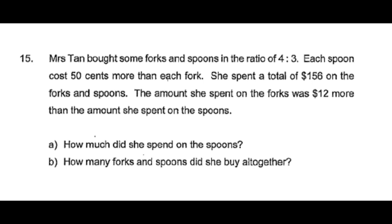Mrs. Tang bought some forks and spoons in the ratio 4 is to 3. Each spoon cost 50 cents more than each fork. She spent a total of 156 dollars on the forks and spoons. The amount she spent on the forks was 12 dollars more than the amount she spent on the spoons.